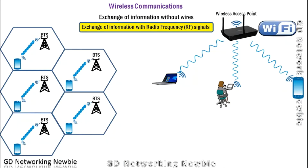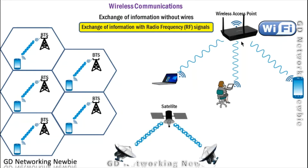Another well-known example of wireless communication is Wi-Fi. Wherever we go, we often ask for the Wi-Fi password so we can use our applications. In this case, we have access points, and we can connect our handset or laptop to that access point using a wireless medium to access internet services.